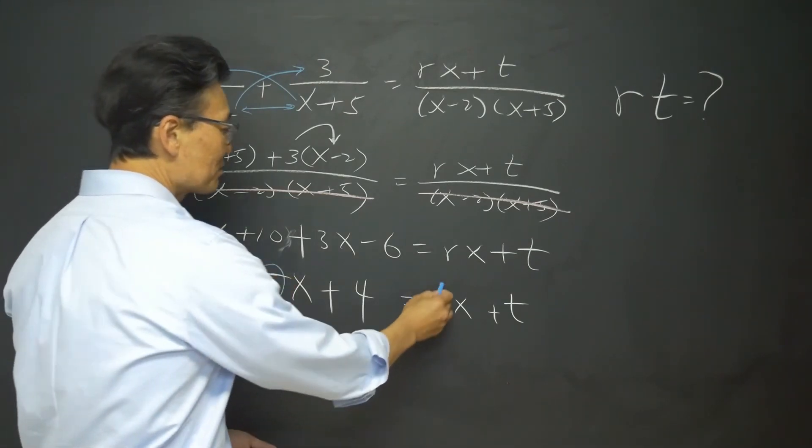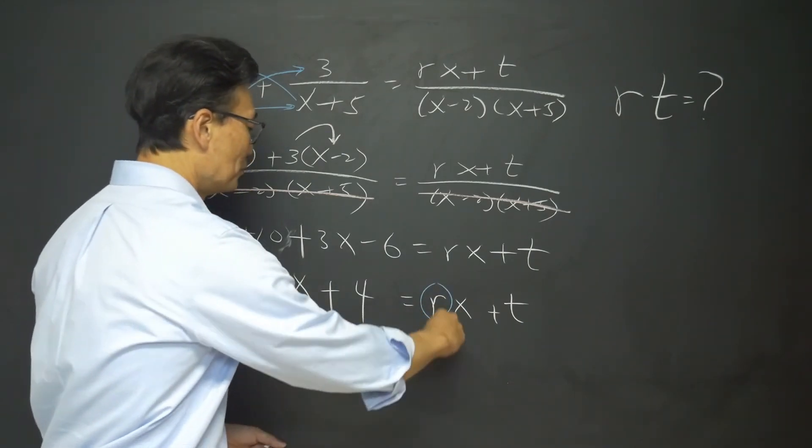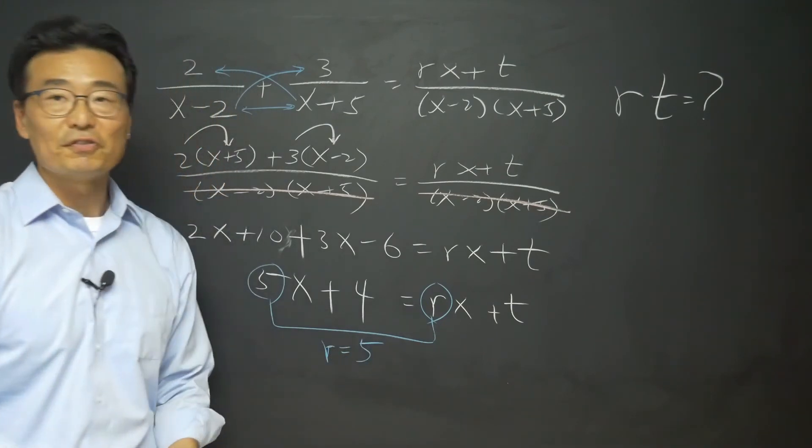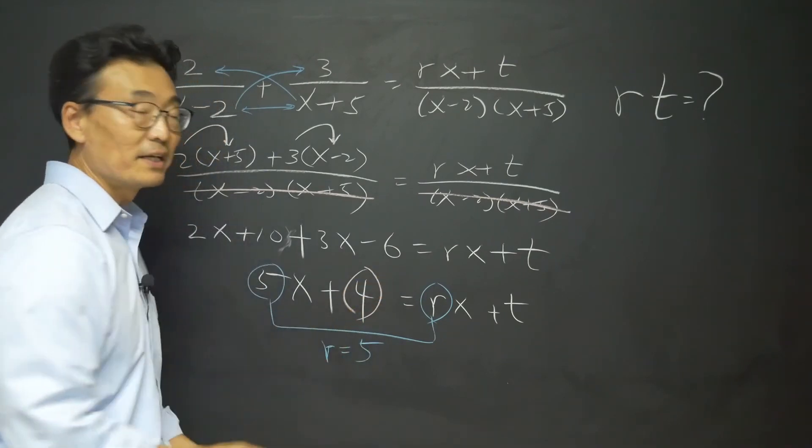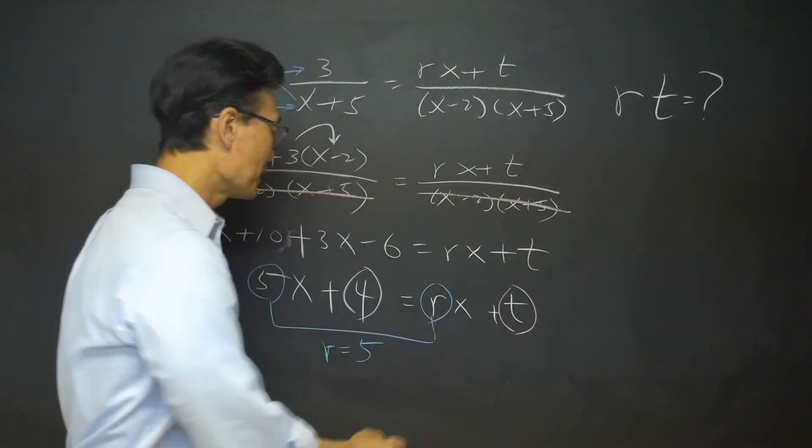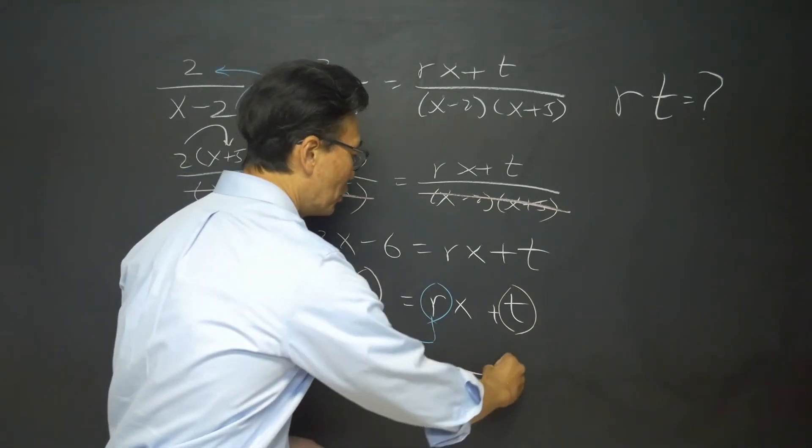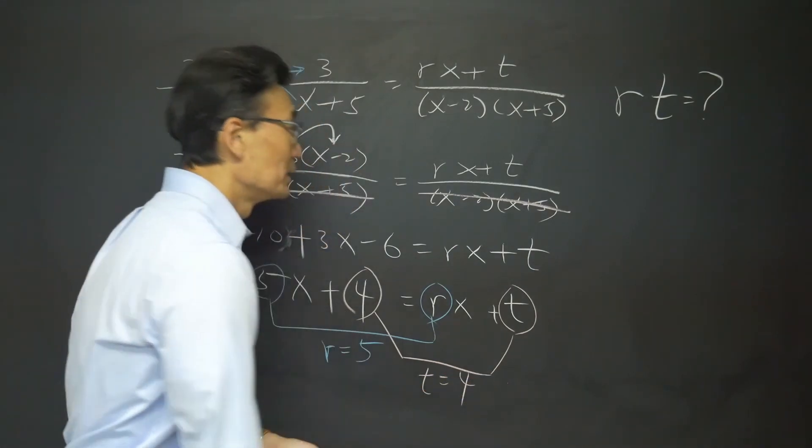Next, 4 does not have an x next to it. t does not have an x next to it. It means that we could go ahead and match up the 4 with the t, giving us t equals 4.